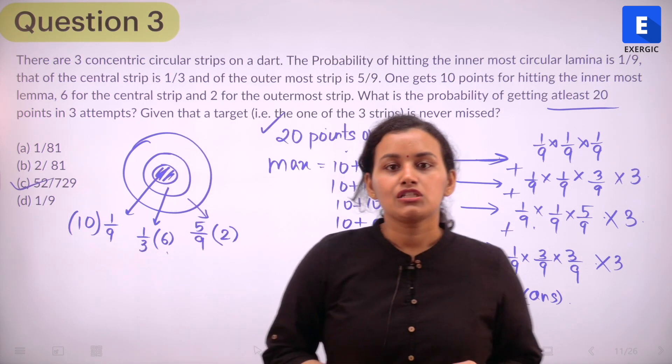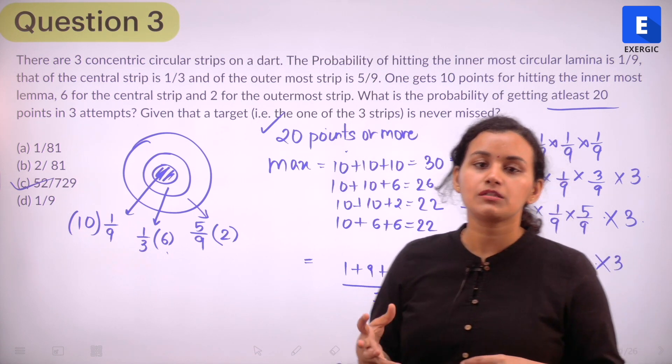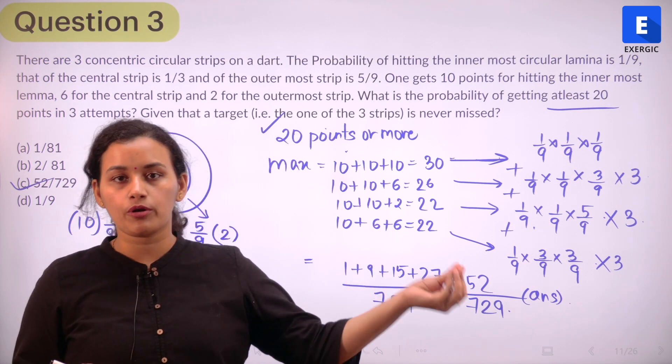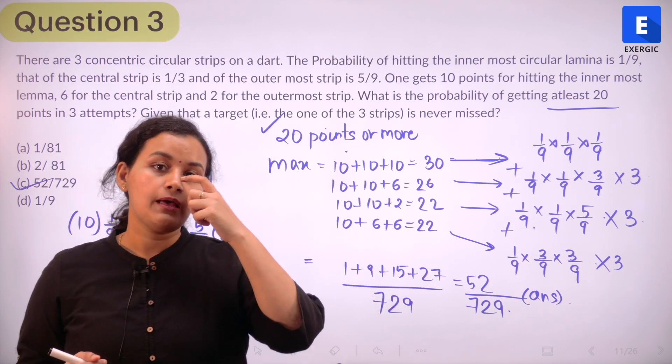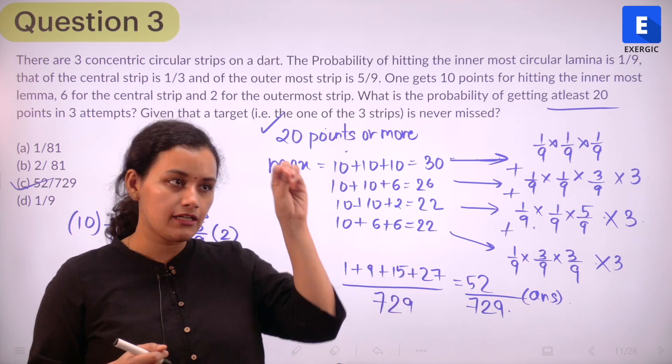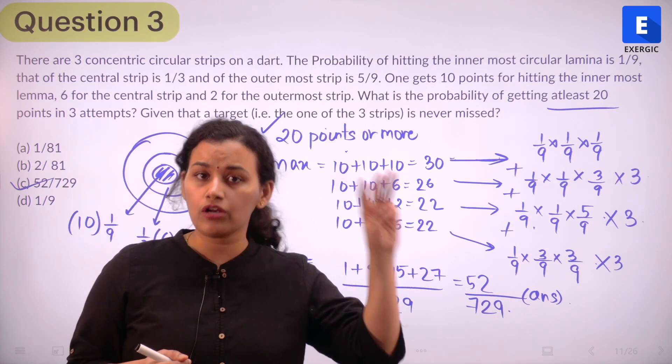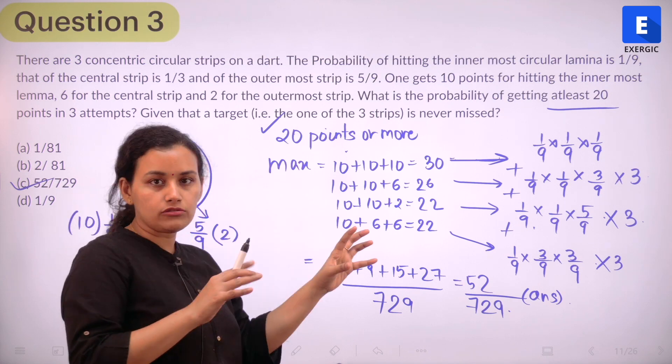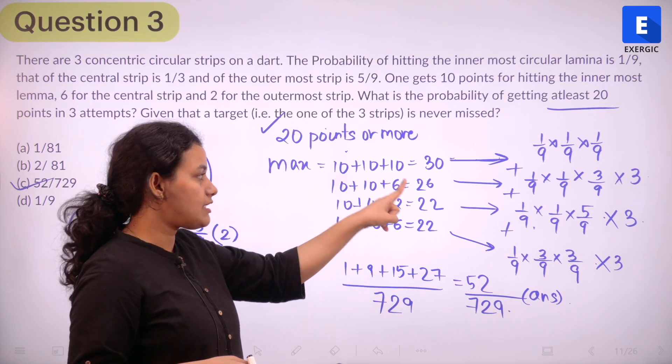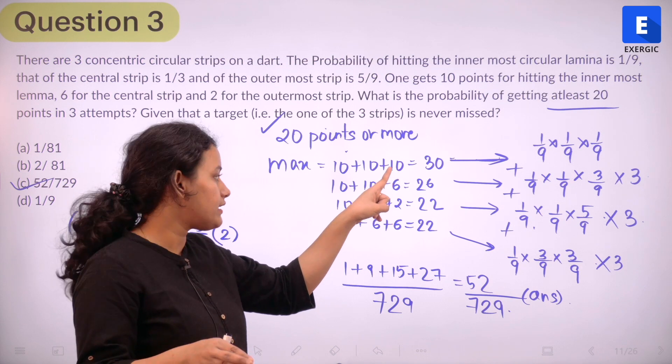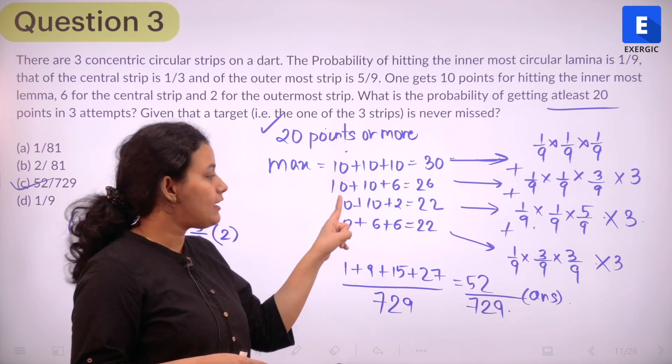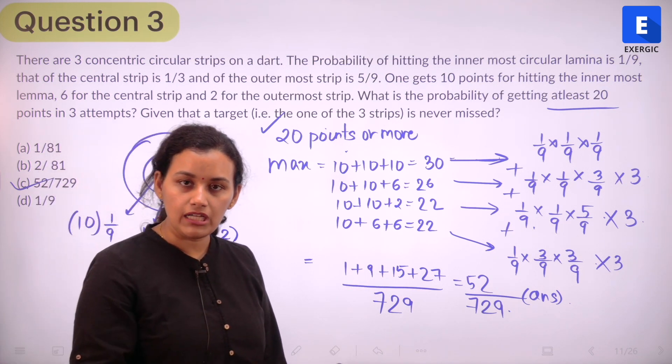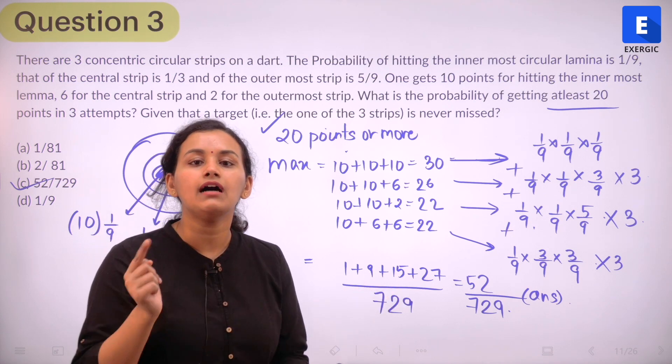So is this clear? So we start off with what are the different possibilities of scoring at least 20 because they have said at least 20 means 20 or more. So 20, 21, 22, any of these scores is possible. But what is the maximum that you can get? If you hit the innermost part of the dart in all of your three attempts, the maximum score you get is 30. So what are the possibilities within that 20 to 30, we need to list them now.